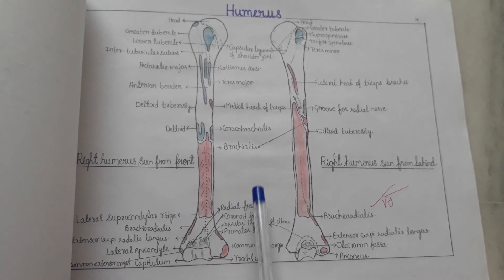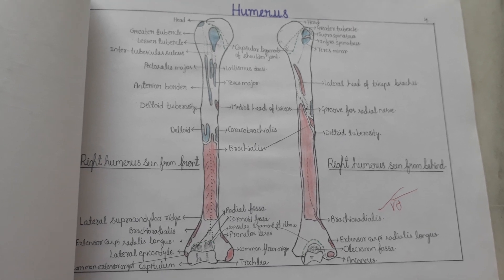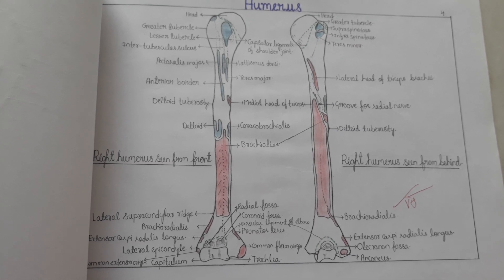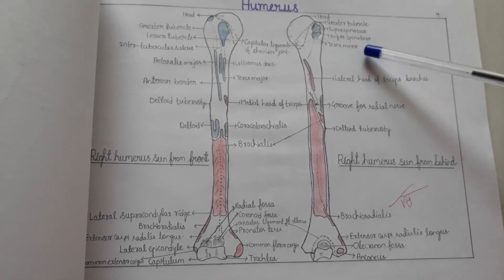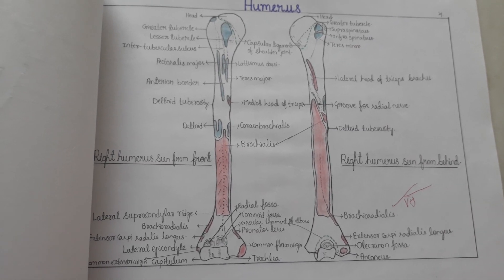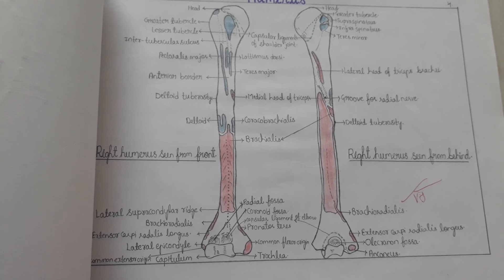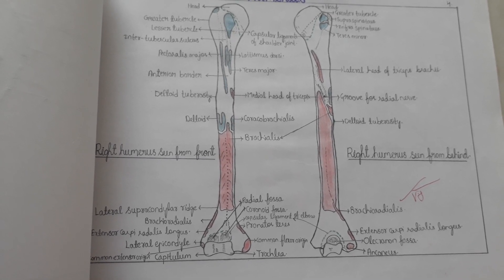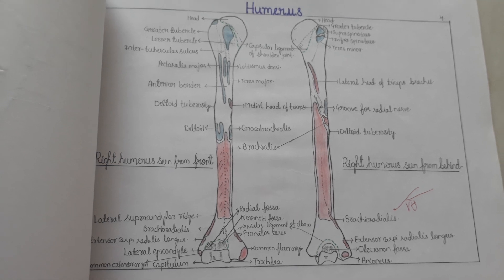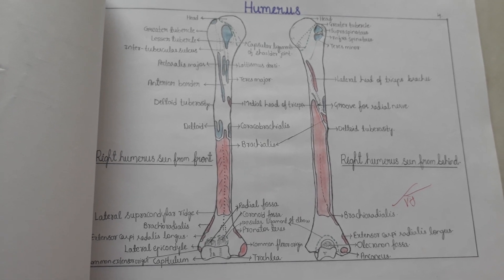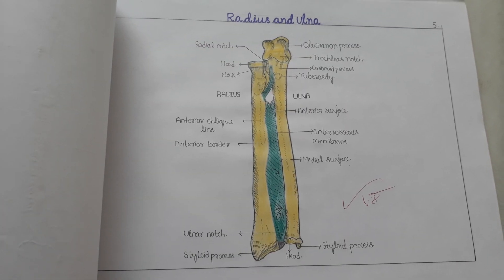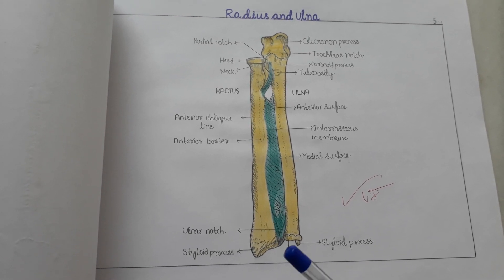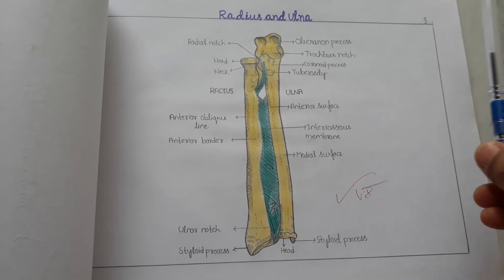You will be given bones as spotters — you have to identify them and be pointed to a specific part and give an explanation. So you have to be prepared. This is the radius and ulna.